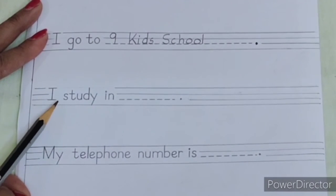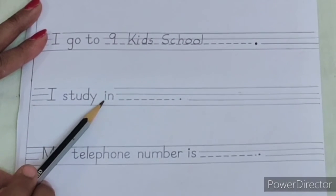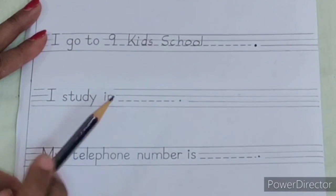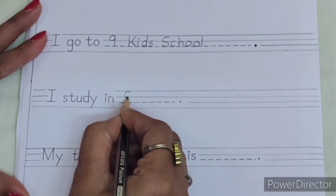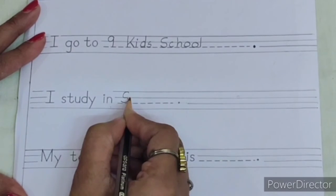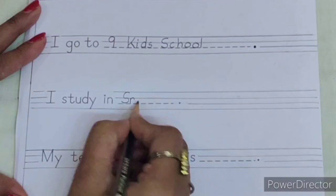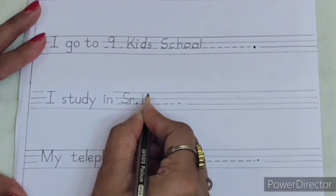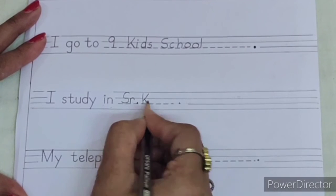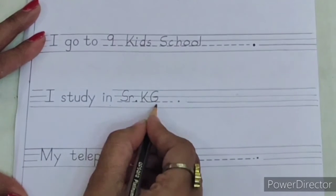I study in. Senior KG. So write capital S-R dot, capital K, capital G. Senior KG.